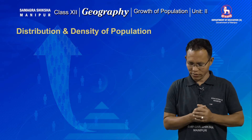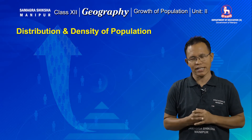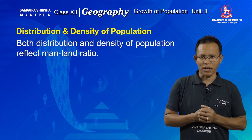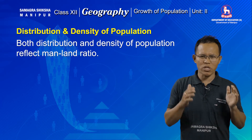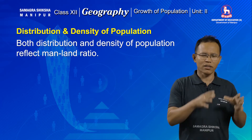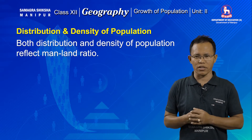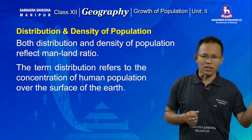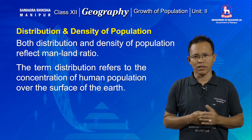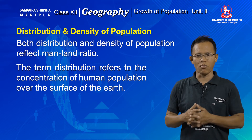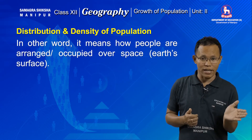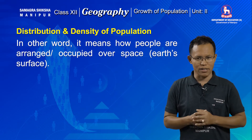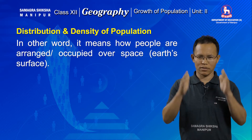Now let's come to the next point: population distribution and population density. Both distribution and density are used synonymously. But as a matter of fact, the two terms have different connotations. Both reflect the man-land ratio, but the term population distribution refers to the concentration of population over the surface of the earth — in other words, how people are spread and managed on the surface of the earth.